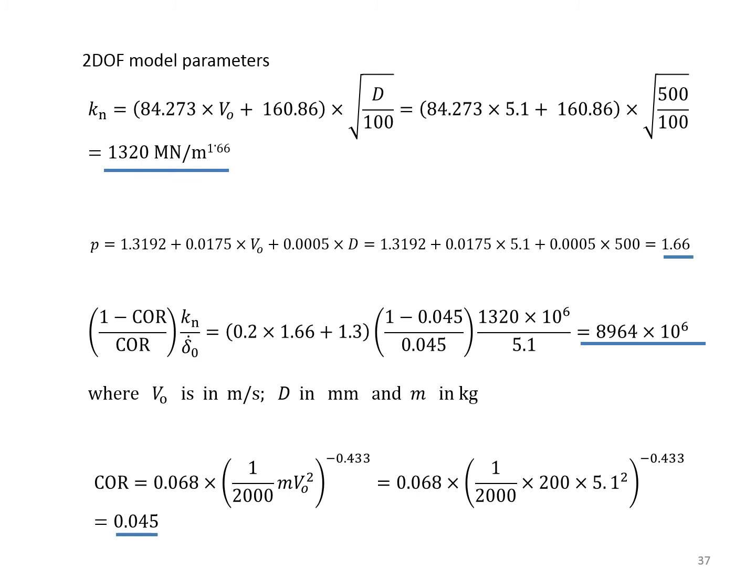Hand calculation is first used to obtain the value of k subscript n, the value of p, and the value of coefficient of restitution. The following sets of slides present the systematic development of an Excel spreadsheet from scratch showing how to obtain the forcing functions of contact.